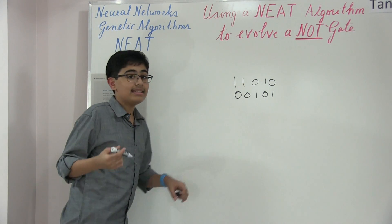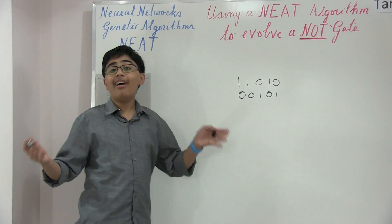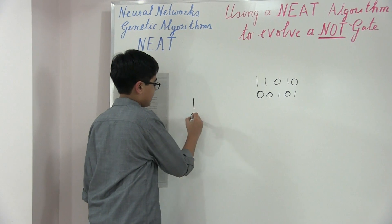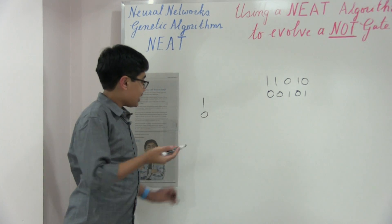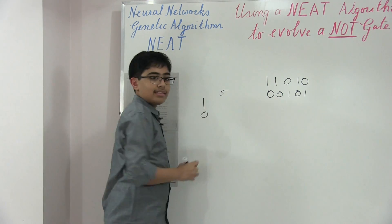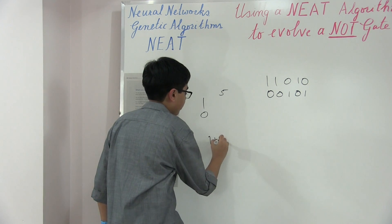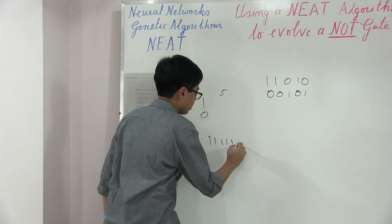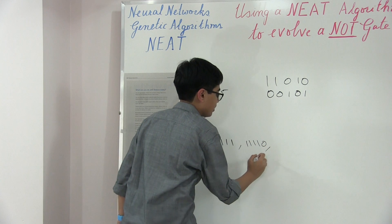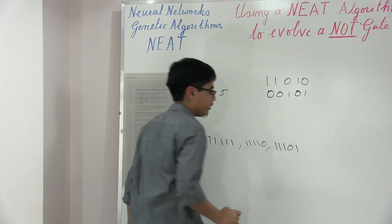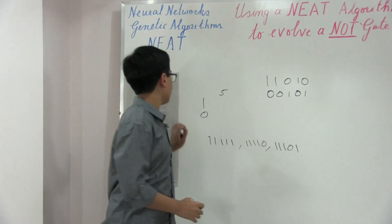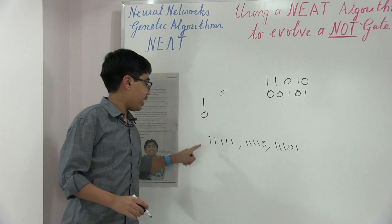Our plan is to use an online combination generator. Let's say we give it the inputs 1 and 0. Using these inputs it'll be able to generate all combinations of these with five digits — such as 1, 1, 1, 1, 1 or 1, 1, 1, 1, 0, and so on — creating every single combination of 1s and 0s together with five digits.